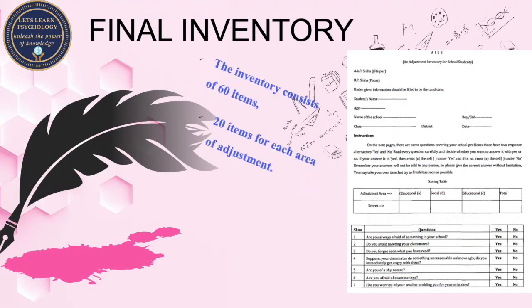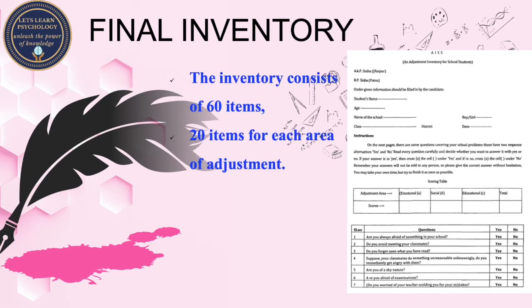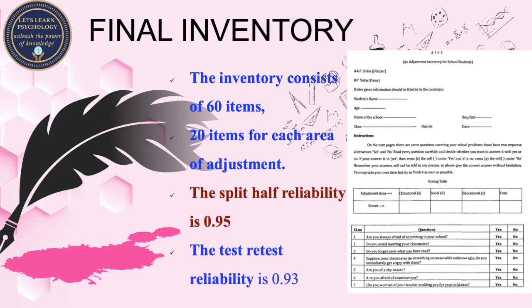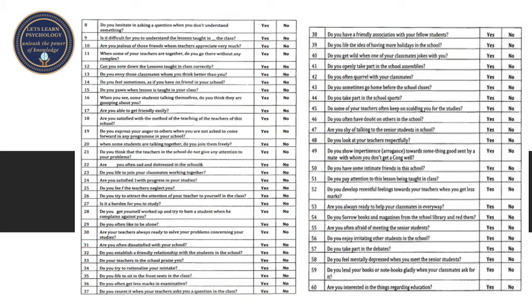The final inventory had 60 items — 20 items in each area of adjustment. The split-half reliability was 0.95, which is very high, and the test-retest reliability is 0.93, which is also very good.